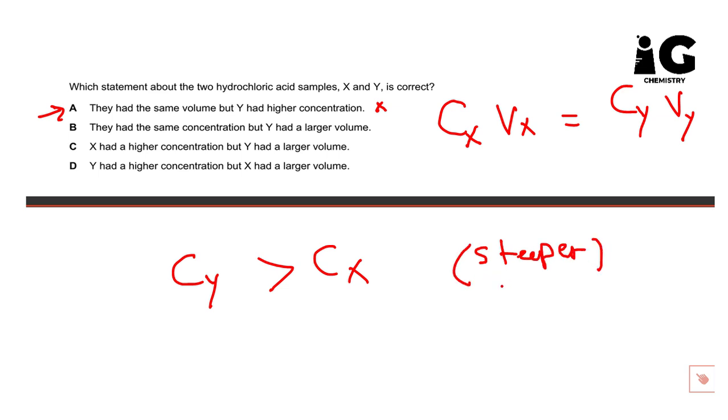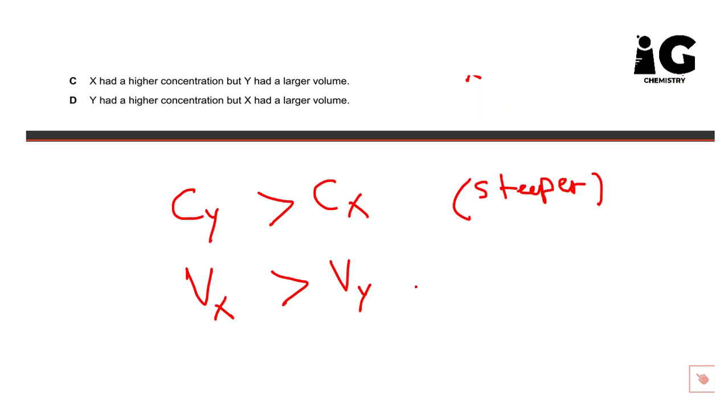So steeper means it's more concentrated. So it means VX should be more than VY. So V for acid X should be greater than V for acid Y, because if we multiply volume with concentration, finally they produce number of moles and it should be the same. So we have concluded that VX or volume of acid X should be greater than volume of acid Y.